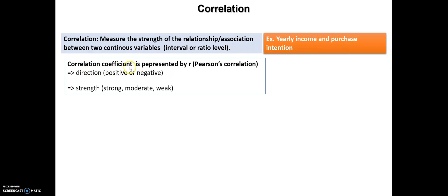The correlation coefficient is represented by R. We have other types of correlations like Spearman, but the most popular one is Pearson correlation. So we're going to focus on the Pearson correlation.